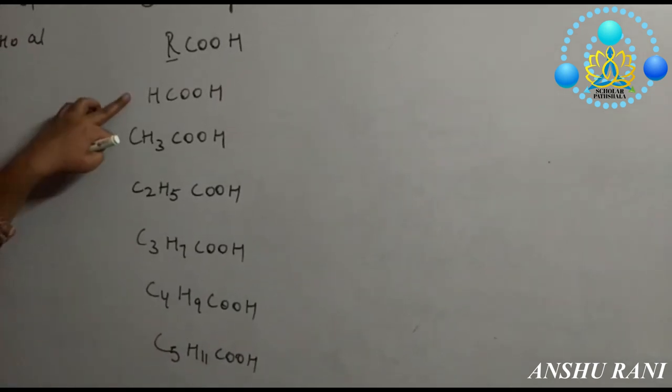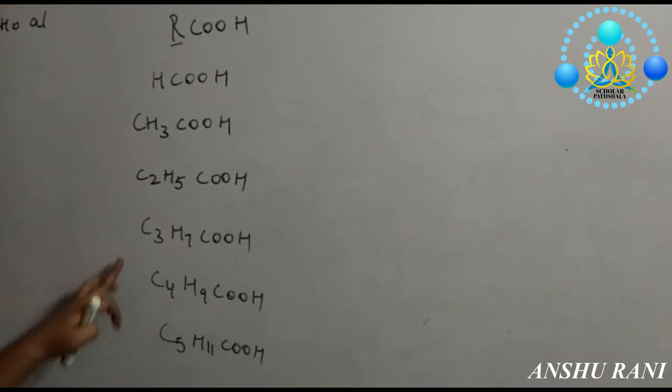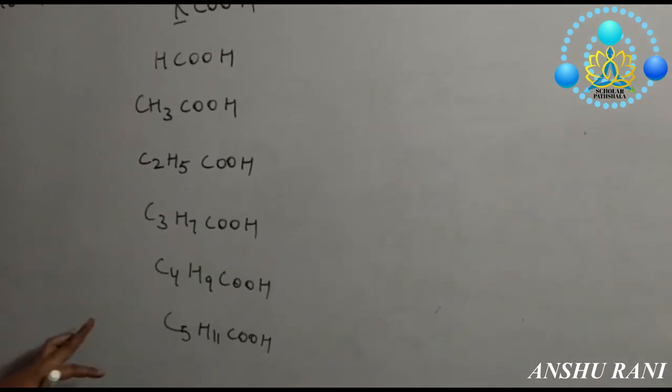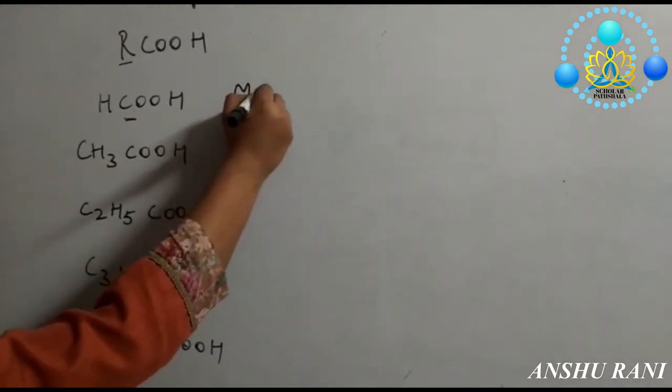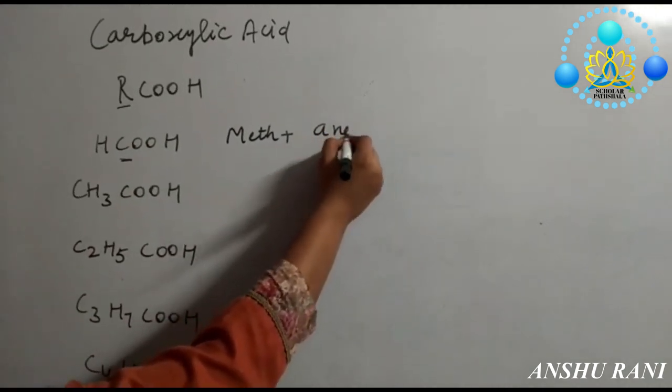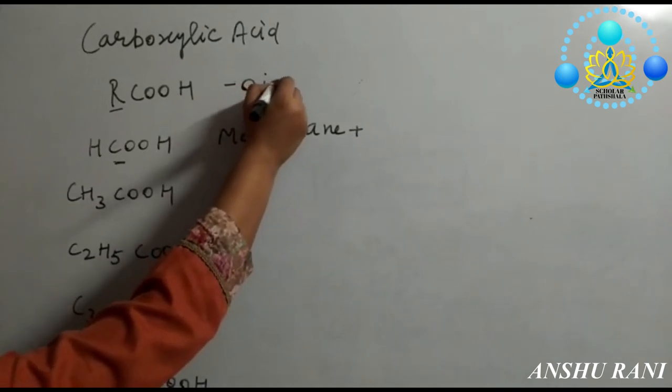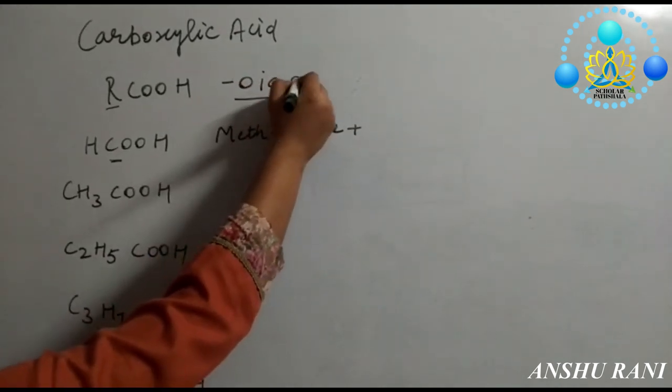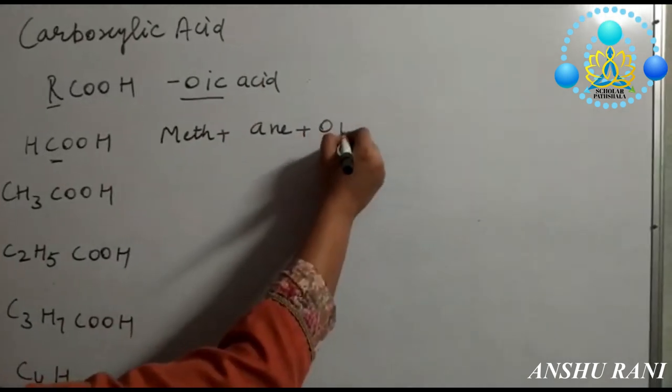This is derivative of methane, this is of ethane, this is of propane. This is derivative of hexane. We will write word root meth, carbon-carbon single bond so -ane, and for carboxylic acid suffix is -oic acid. You will write -oic acid.